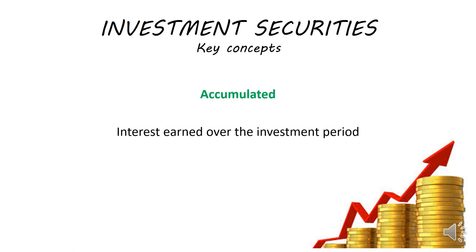What does it mean when we talk about accumulated? When you earn interest over an investment period — if you earn interest in the first year, the second year, and the third year — when you add all the interest that you have earned over the total investment period, we are going to talk about your accumulated interest. So it's all the interest that you have earned over the entire period of your investment.